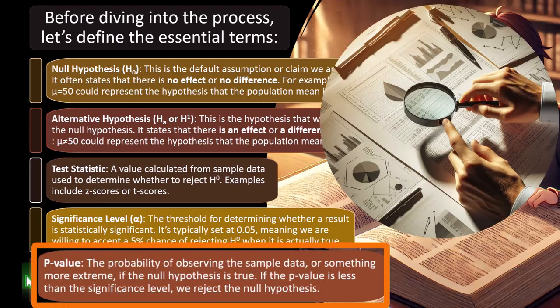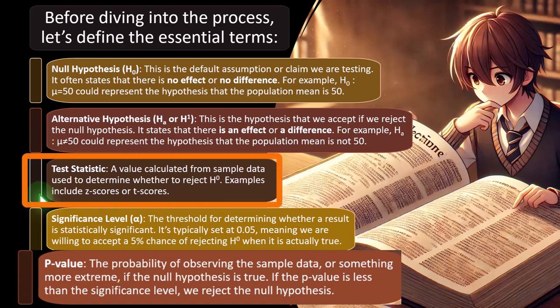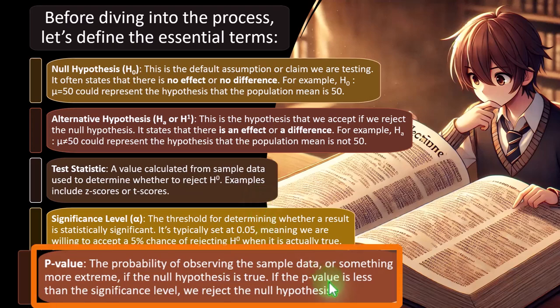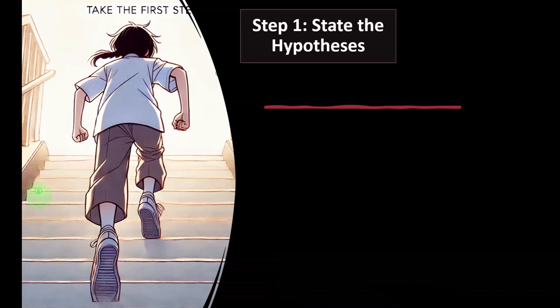The p-value is the probability of observing the sample data, or something more extreme, if the null hypothesis is true. If the p-value is less than the significance level, we reject the null hypothesis. Think of the p-value as the area under the curve. If our test statistic is way out in the tail of the graph, the area under that tail will be less than alpha — the five percent we accepted. We'll talk more about this in practice problems; this is the general layout.